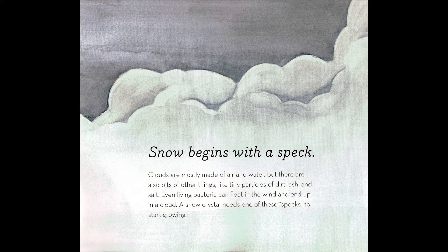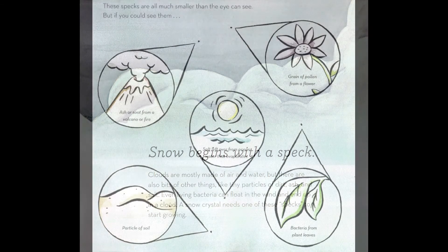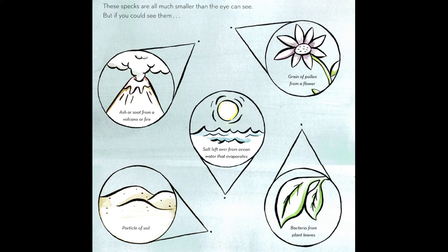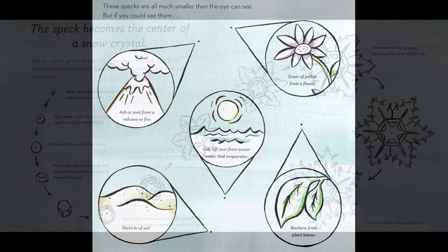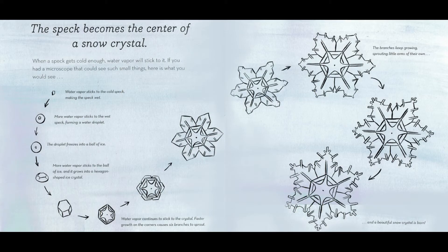Snow begins with a speck. Clouds are mostly made of air and water, but there are also bits of other things, like tiny particles of dirt, ash, and salt. Even living bacteria can float in the wind and end up in a cloud. A snow crystal needs one of these specks to start growing. These specks are much smaller than the eye can see, but if you could see them...